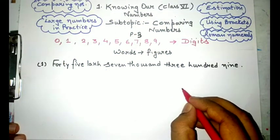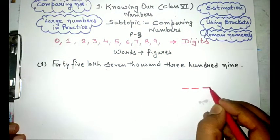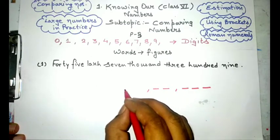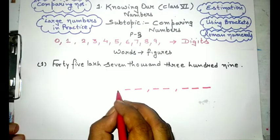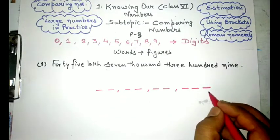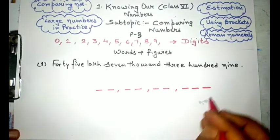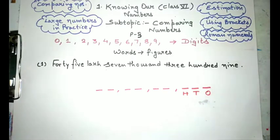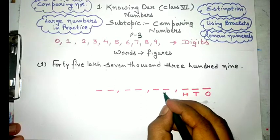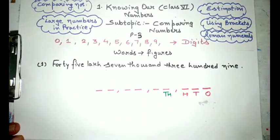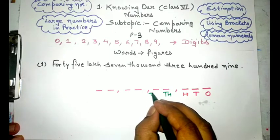Now when we are going to write this number into figures, first let us make a small table type structure in which we have made slashes for the digits: ones, tens, hundred, then thousand, after that ten thousand.